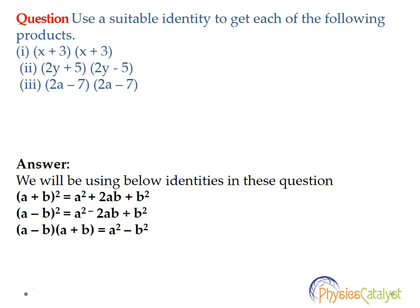To solve these questions, we have to use the below identities. The first identity is (a + b)² = a² + 2ab + b².